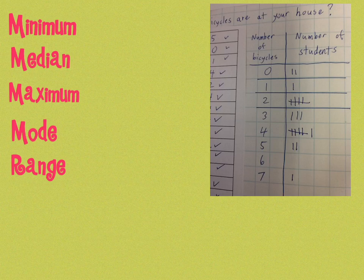Okay, so let's take a look at some real data and see if we can figure out these five values. And this here is some data I took on how many bicycles are at the houses of our students in our class. And I've already organized this into a t-chart with tally marks. Now, the easiest way to do this, actually, is to write out these numbers in order that they occurred.